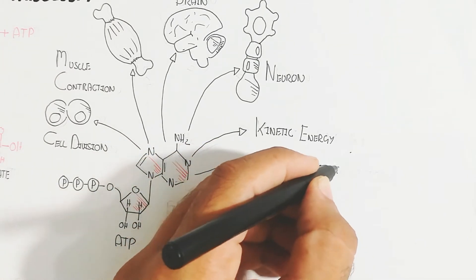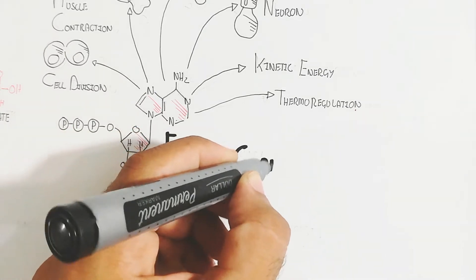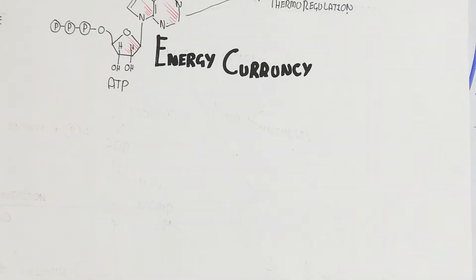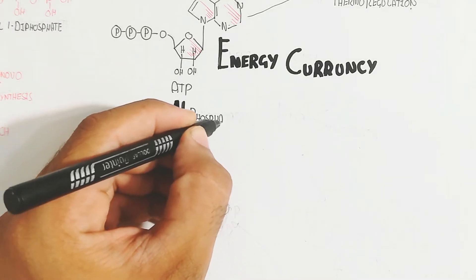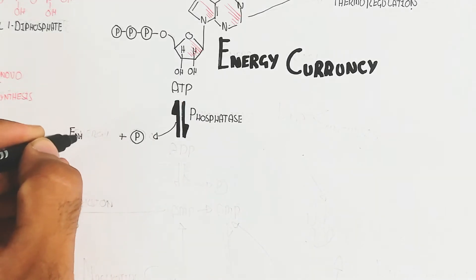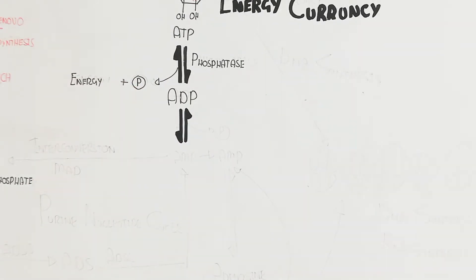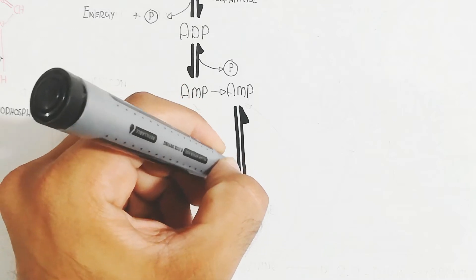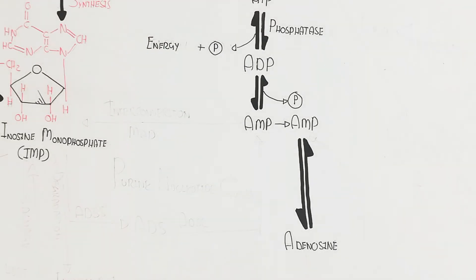When ATP dissociates, it releases a phosphate group and produces energy. The phosphatase enzyme produces ADP (adenosine diphosphate). Removing one more phosphate from ADP releases additional energy and produces AMP (adenosine monophosphate), which contains one phosphate group.